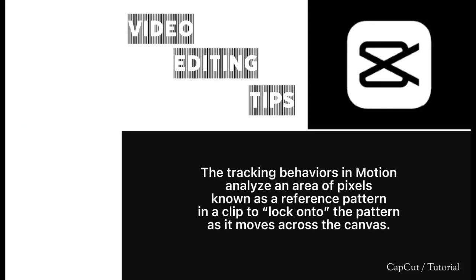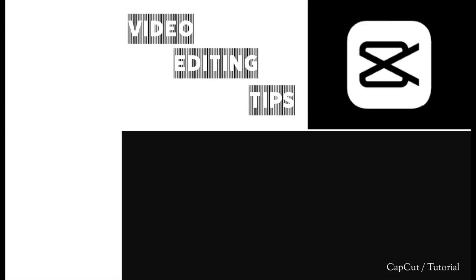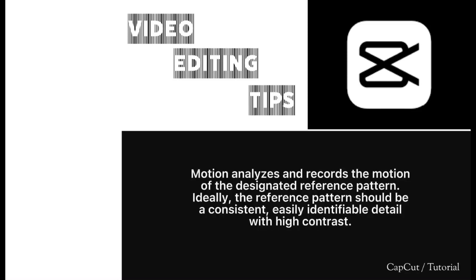The tracking behaviors and motion analyze an area of pixels known as a reference pattern in a clip, to lock onto the pattern as it moves across the canvas. You specify the reference pattern by dragging one or more on-screen trackers to the area of the clip you want to analyze. Motion analyzes and records the motion of the designated reference pattern. Ideally, the reference pattern should be a consistent, easily identifiable detail with high contrast.